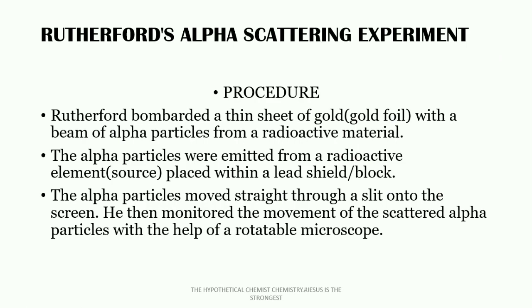Let's talk about the procedure that Rutherford used that enabled him in his discovery of this subatomic particle. Rutherford bombarded a thin sheet of gold foil with a beam of alpha particles from a radioactive material. The alpha particles were emitted from a radioactive source placed within a lead shield or block. The lead block was acting as a shield for the radioactive material, and the alpha particles moved straight through a slit into the screen.